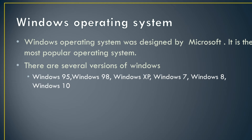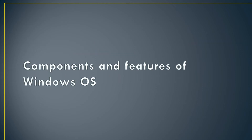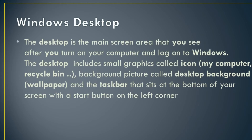Now we will discuss the different components and features of the Windows operating system. The first thing we see when we open Windows is the desktop. A desktop is the main screen area that you see after you turn on your computer and log on to Windows. The desktop contains icons like My Computer and Recycle Bin, and has a background picture called the desktop background or wallpaper.